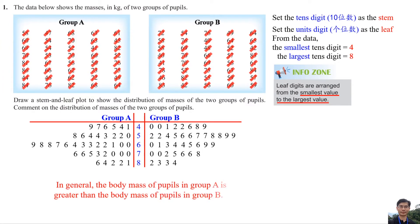In general, the body mass of pupils in Group A is greater than the body mass of pupils in Group B.